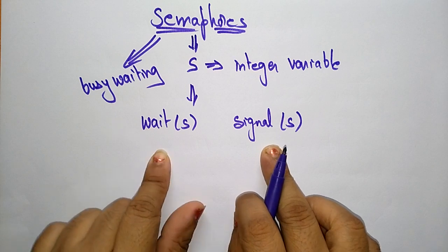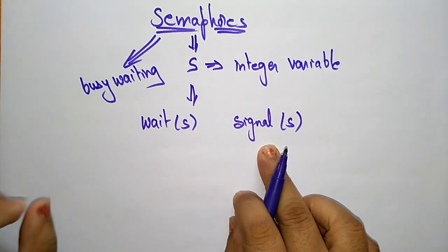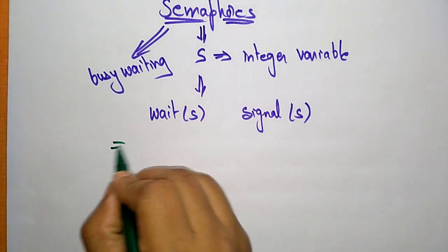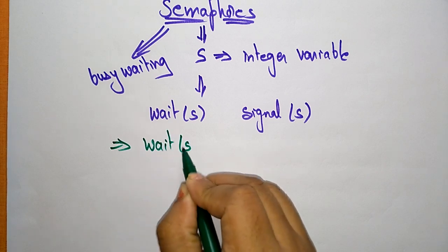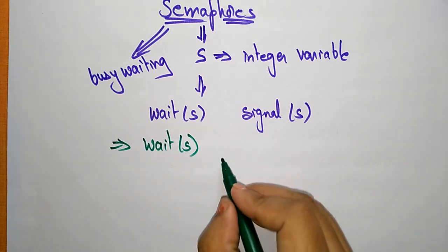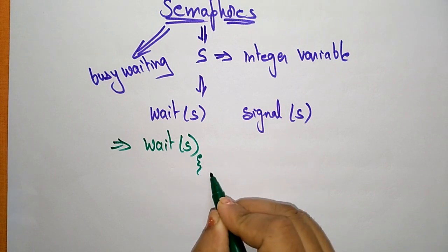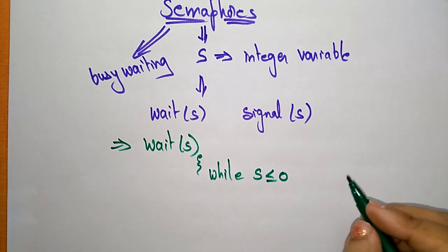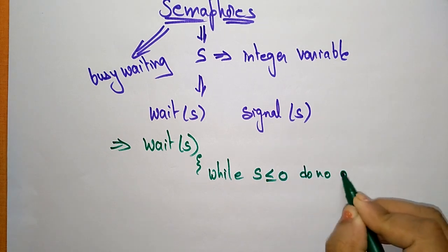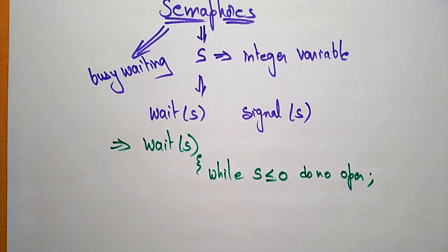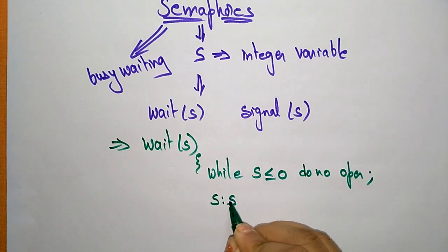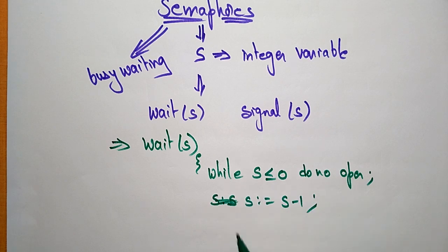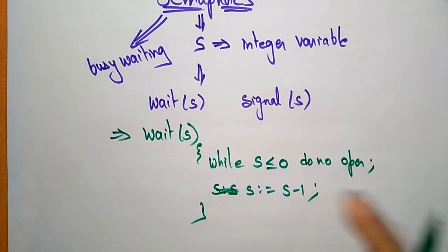What do wait and signal do, and why does the semaphore use them to manage busy waiting? First, what does wait do? Whenever you call wait(S), it enters a while loop: while S less than or equal to 0, do no operation — semicolon. Then S is decremented: S equals S minus 1. This is the code for wait.